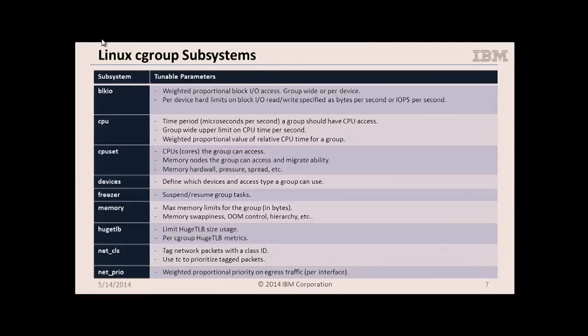So there's one for block I/O. I think you can imagine what that one does. With block I/O, for example, you can say: I have a cgroup blue, you can only use 50 IOPS per second, whereas cgroup red can use 150. You can also get detailed metrics — how many IOPS did this particular cgroup read, or how many bytes has it written?